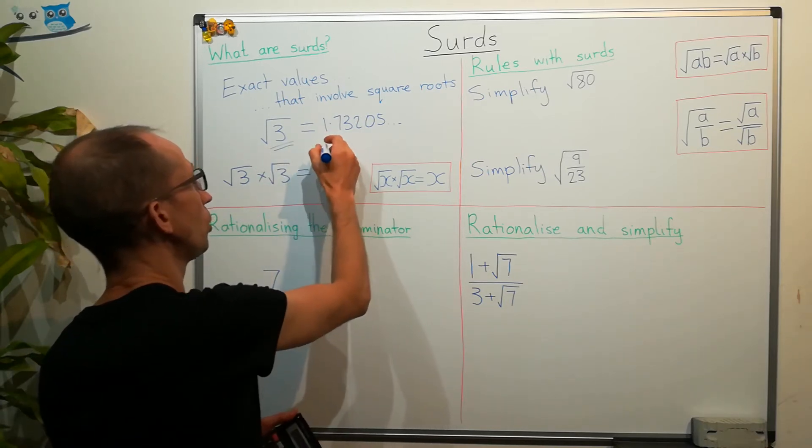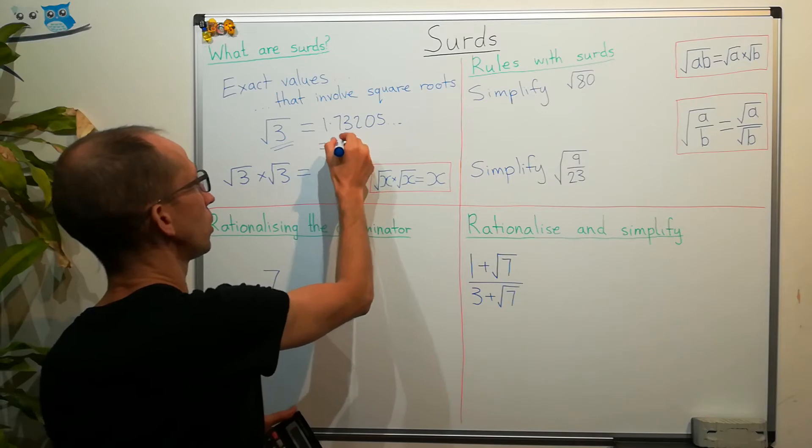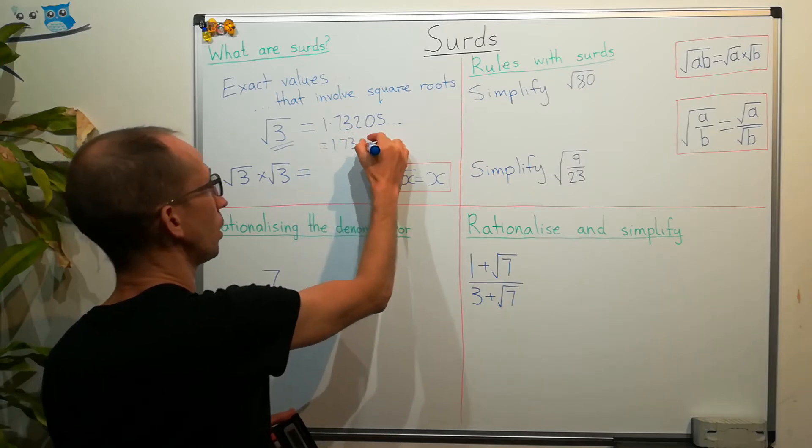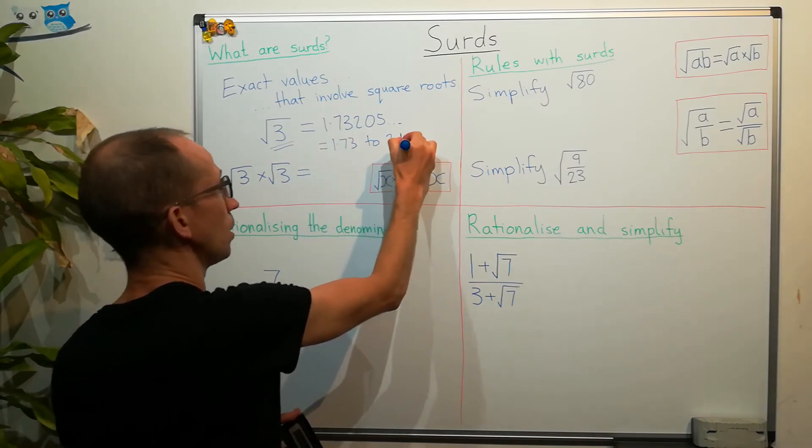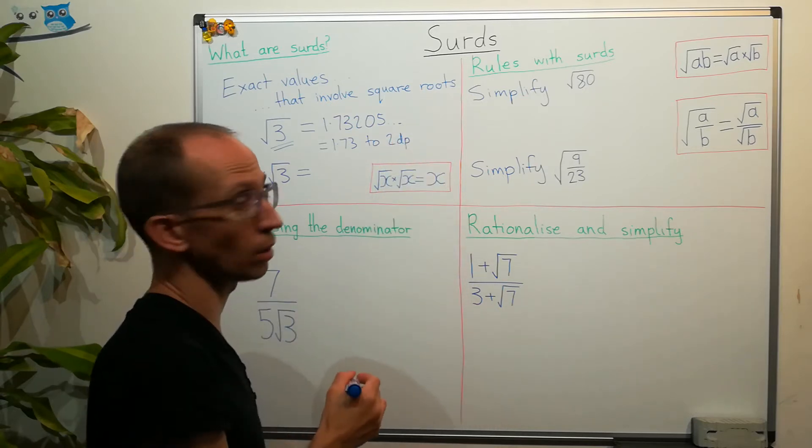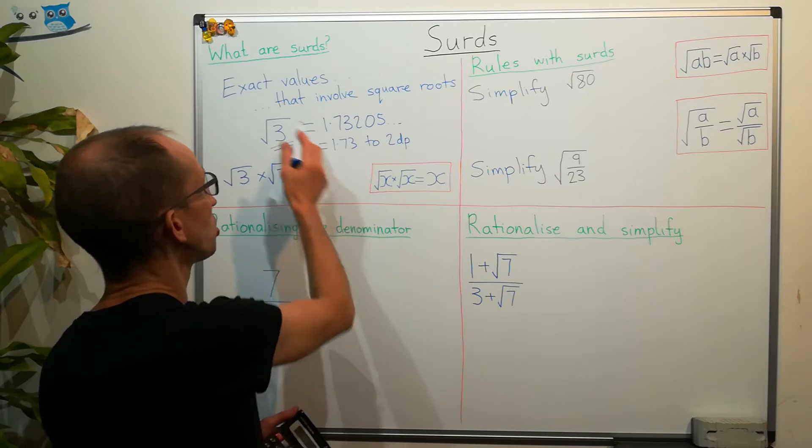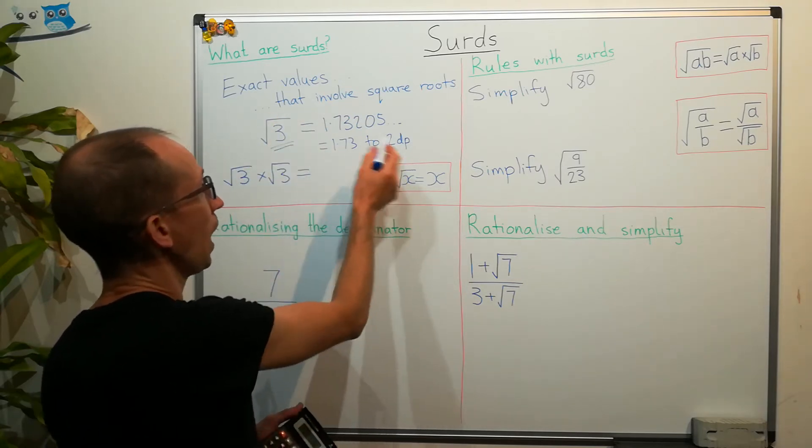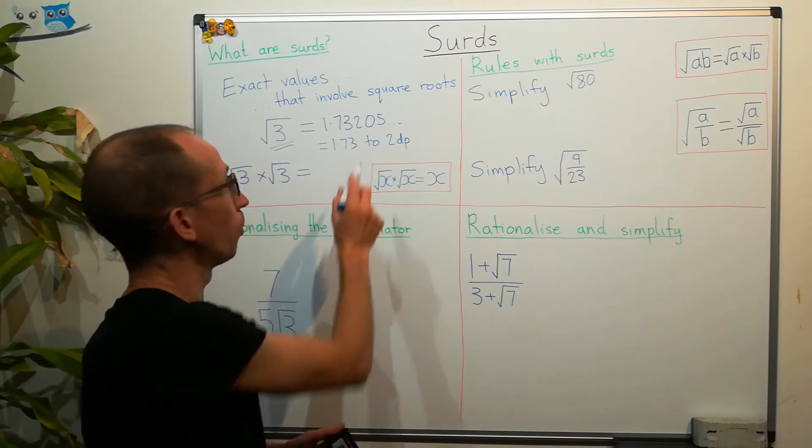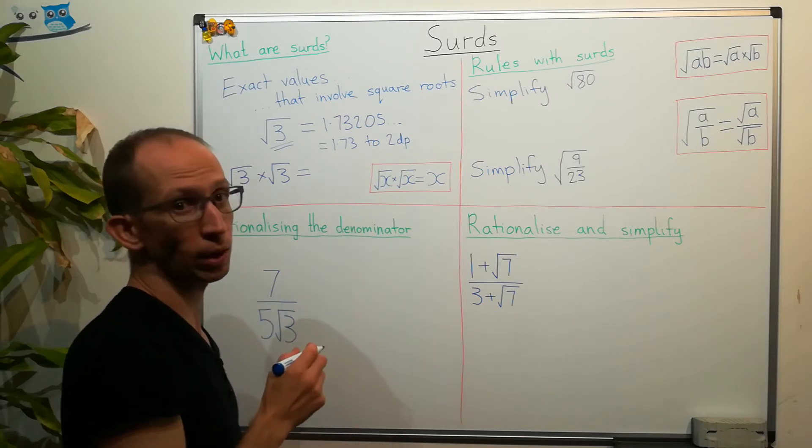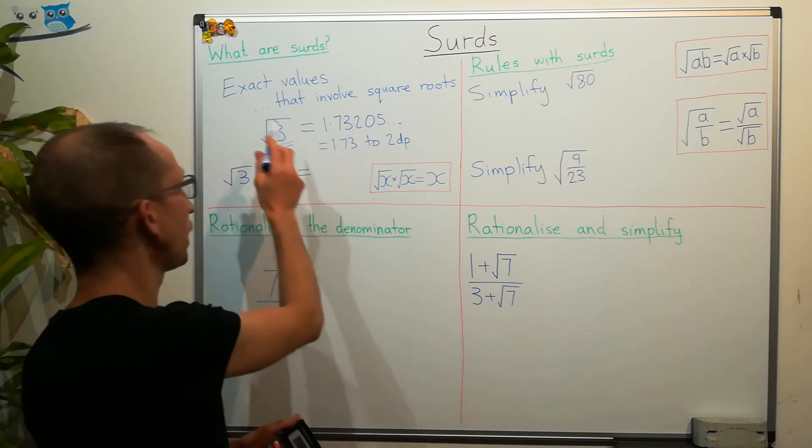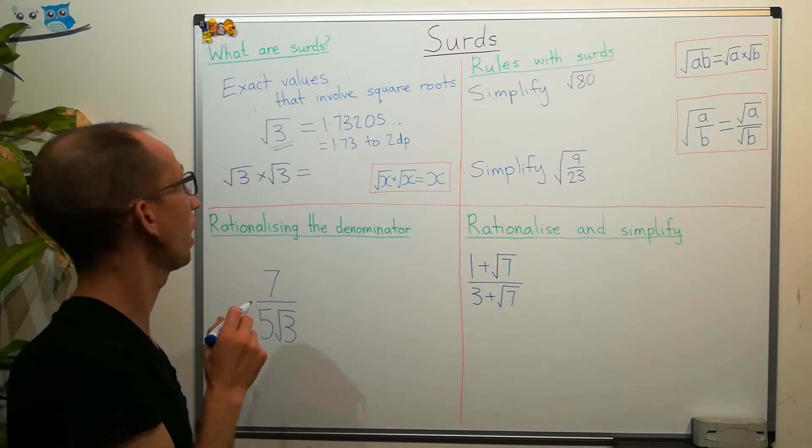If I want to, I could write it as 1.73 and state what I'm rounding it to. And sometimes it's good to do that in your answers. It might even be good to write the exact form and then also show a rounded form, but always state what you're rounding it to. And remember that the exact answer can only be written like that.